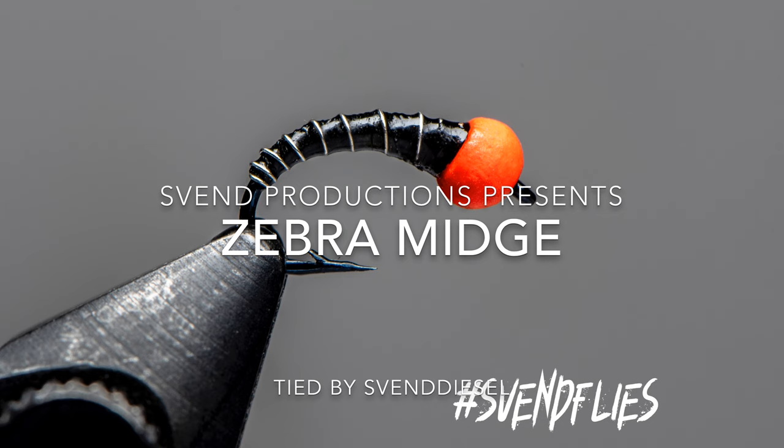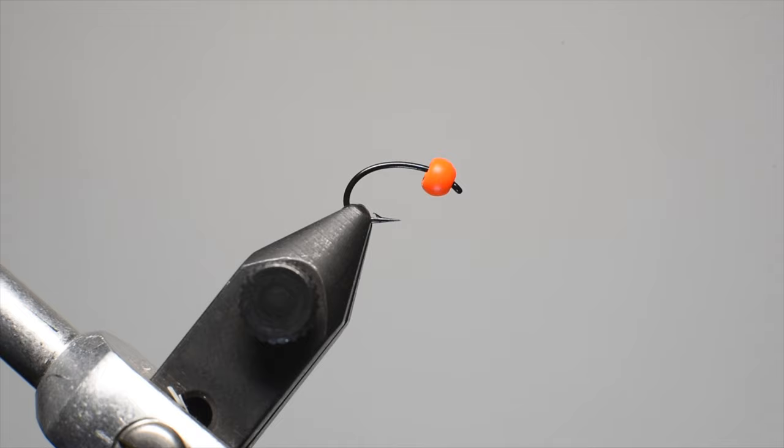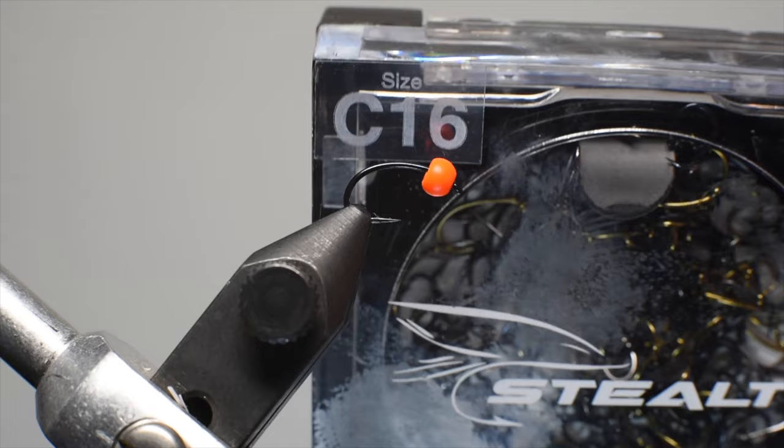What's up everybody, Sven Diesel here. We're just going to be tying up some zebra midges today. Me and my boy, I was teaching him how to tie them and figured why not make a video to help them out. So the zebra midge, we're doing it on a curved hook here, this is a size 16.